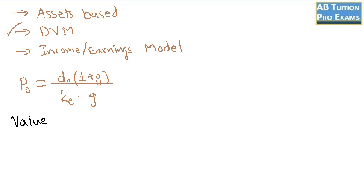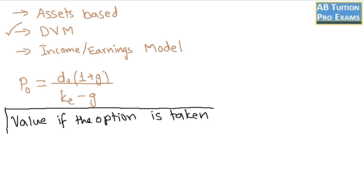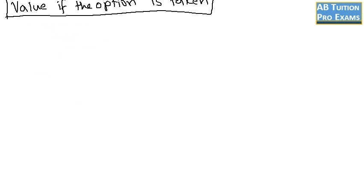Value of the company if the option is taken. As you can see I am using now black color. This is what you should definitely write on your answer sheet. The value in P2 because if the option is taken we are given the values in two years.